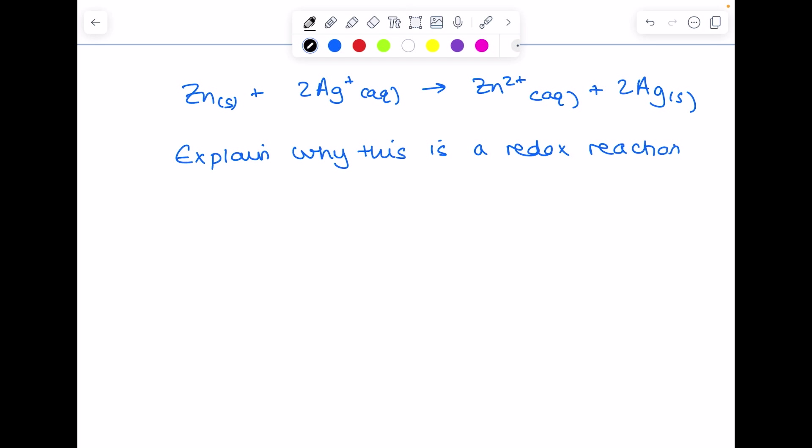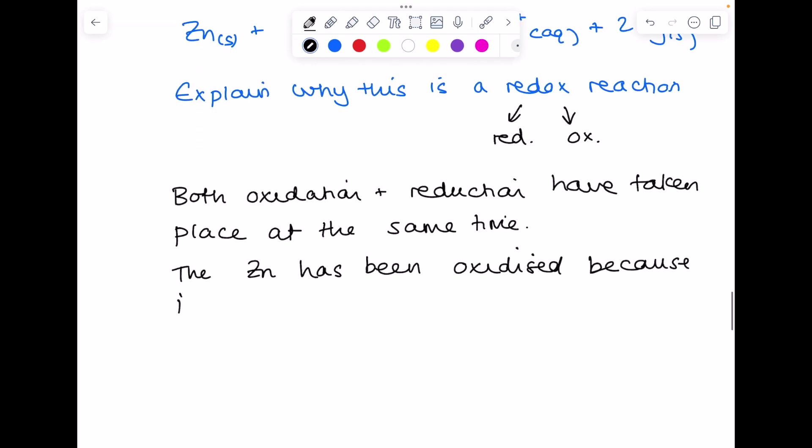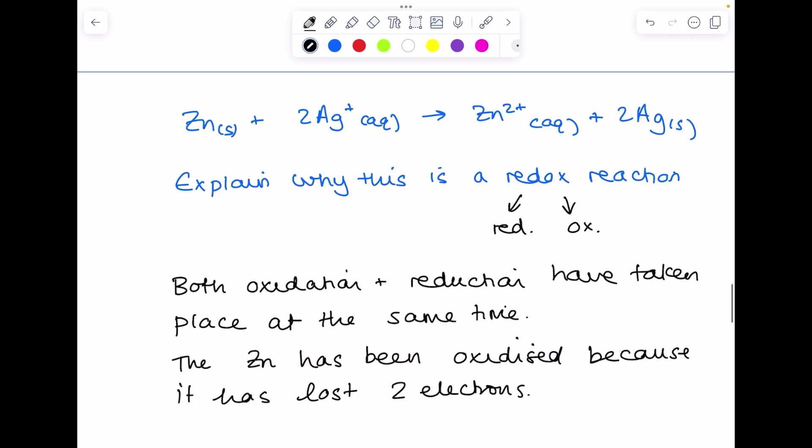Now we're being asked to explain why this is a redox reaction. So remember, redox means that both reduction and oxidation are taking place at the same time. So we're going to point that out. We're going to point out what's been reduced and what's been oxidized. Zinc has been oxidized. Say why? Because it has lost two electrons. The Ag+ has been reduced because it has gained an electron.